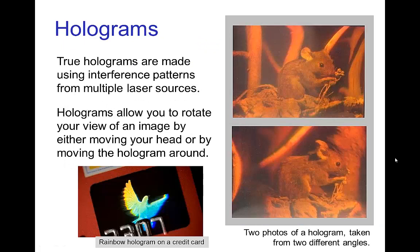The best type of 3D effect would come from true holograms, which are made using interference patterns from multiple laser sources. The best type requires active lasers, though there is also a simpler type called a rainbow hologram, seen on credit cards or other anti-counterfeiting devices. With a true hologram, when you rotate your view — either by moving your head or the hologram itself — you can see around the image as if it were a true 3D object.